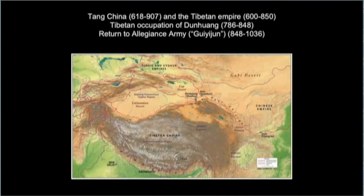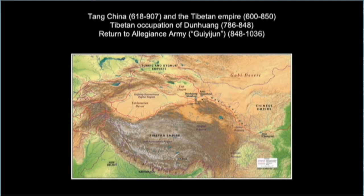Let's take a look at the chronology of this region. What's interesting about the long-term sustained interactions between the Chinese and the Tibetans is that the Tang Empire and the Tibetan Empire developed really side by side, comprising a parallel chronology. The dates of the Tang Dynasty are 618 to 907, overlapping closely with the Tibetan Empire's dates of 600 to 850. Between 786 and 848, the Tibetans occupied Dunhuang, and then in the mid-9th century, the Tibetans were expelled under the Chinese military general Zhang Yichao.